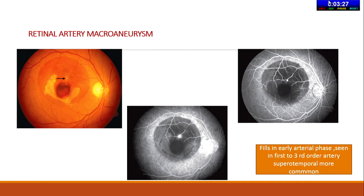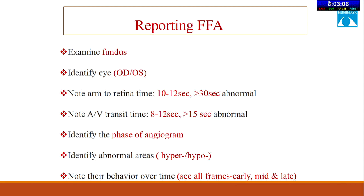Retinal macroaneurysms are not very common, but can happen in ladies in the 4th decade, occurring in 1st to 3rd order vessels, causing leak from the early phase of the angiogram with progressively increasing size and intensity. While reporting in FFA: first see the fundus photograph, identify the eye, note the arm-retinal circulation time, note the AV transit time, identify the phase of angiogram, identify the type of abnormality — whether hypofluorescence or hyperfluorescence — and go through the early, intermediate, and late stages to know the type of abnormality.